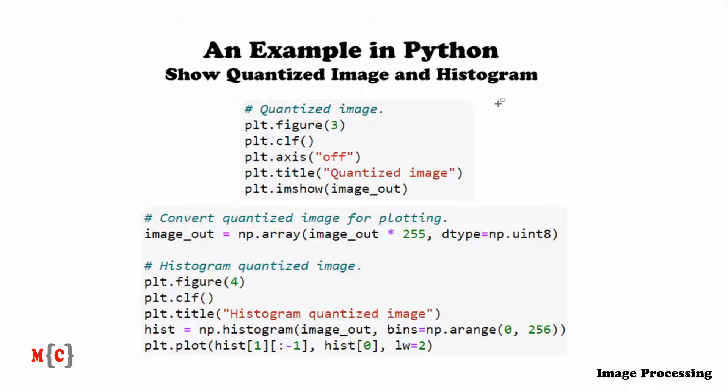The code looks like this. Again, for plotting, there's nothing special. After the histogram, we also convert the image back and then create a histogram of the image.